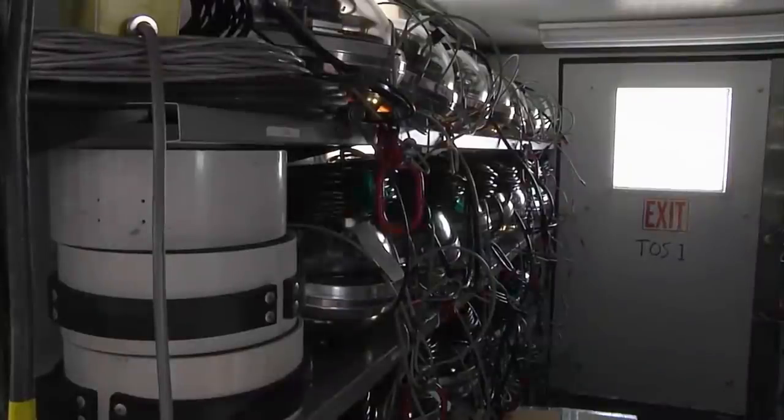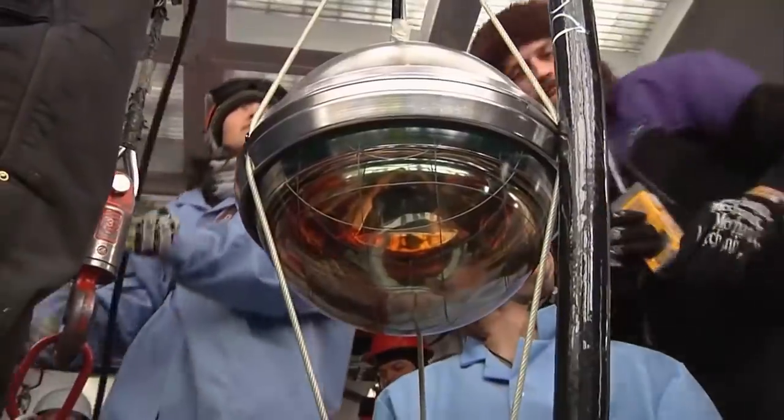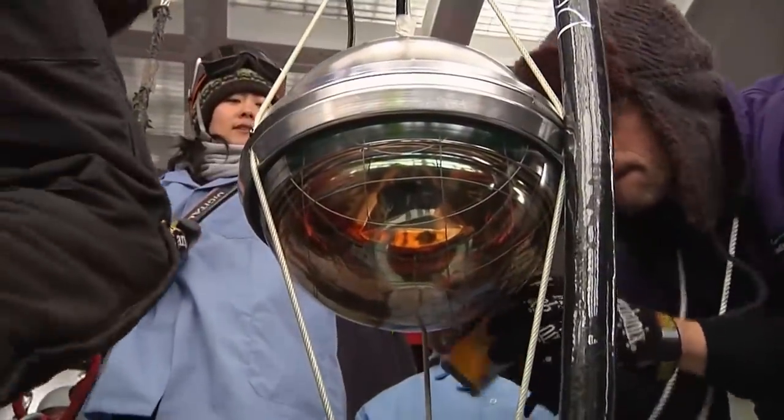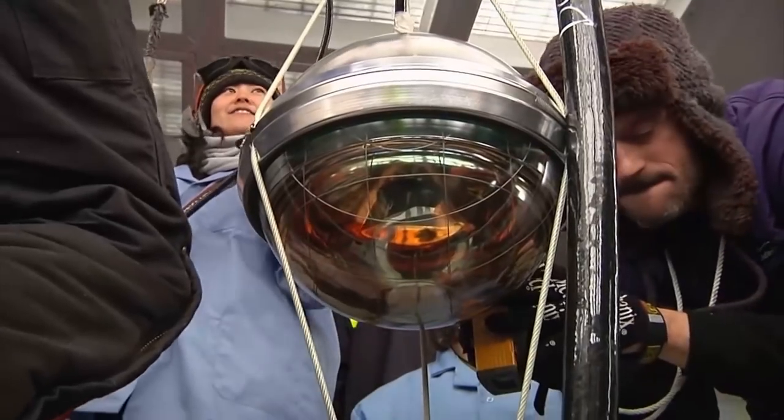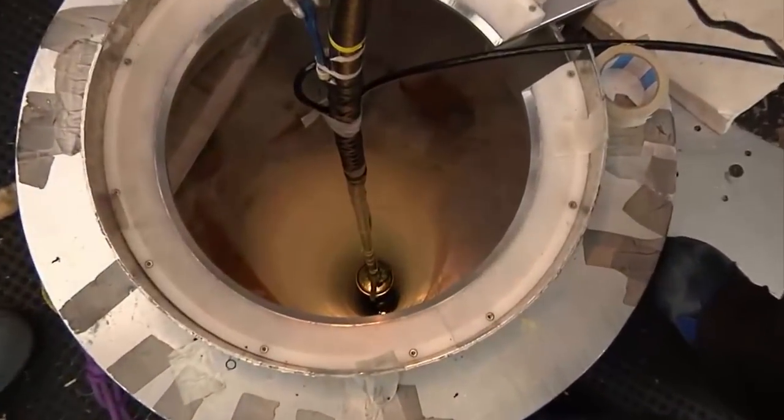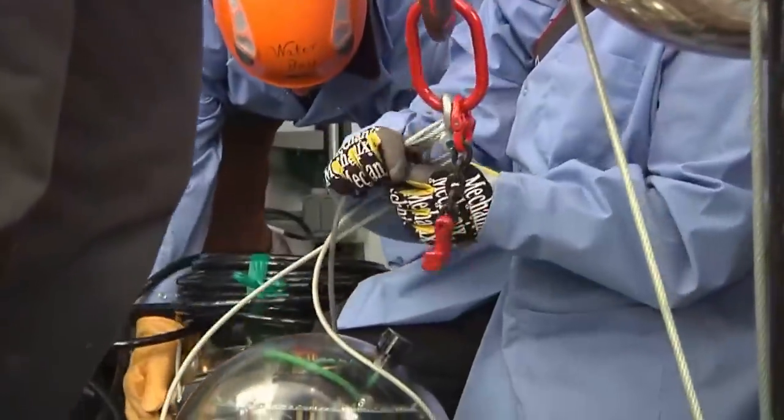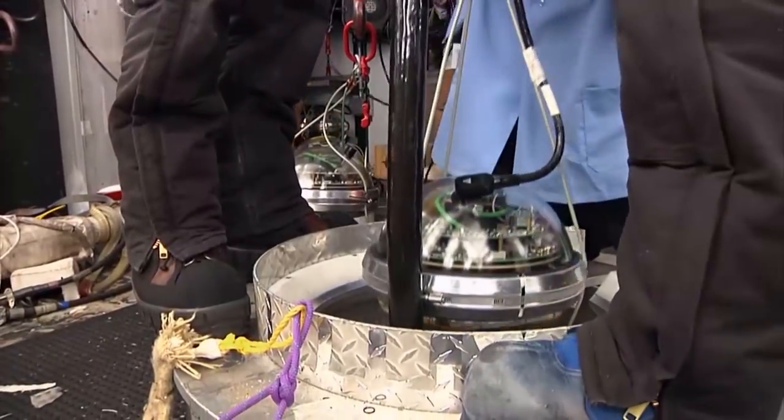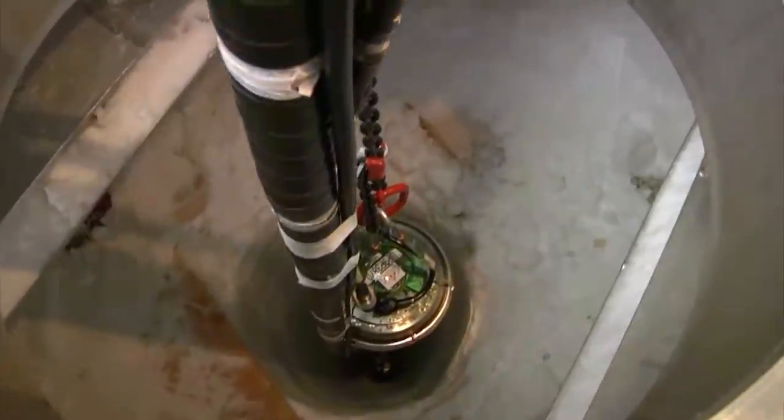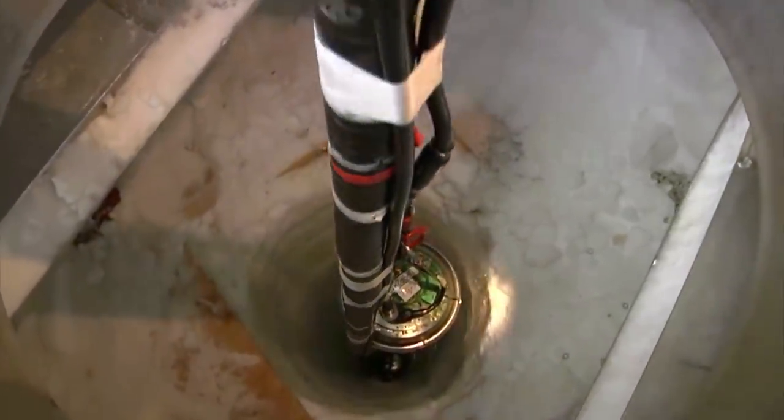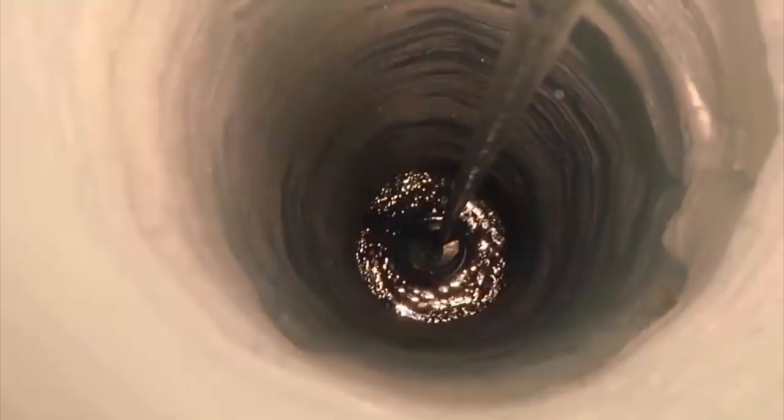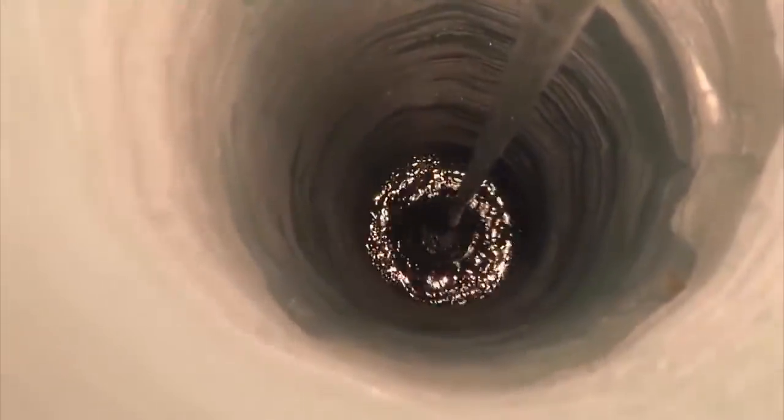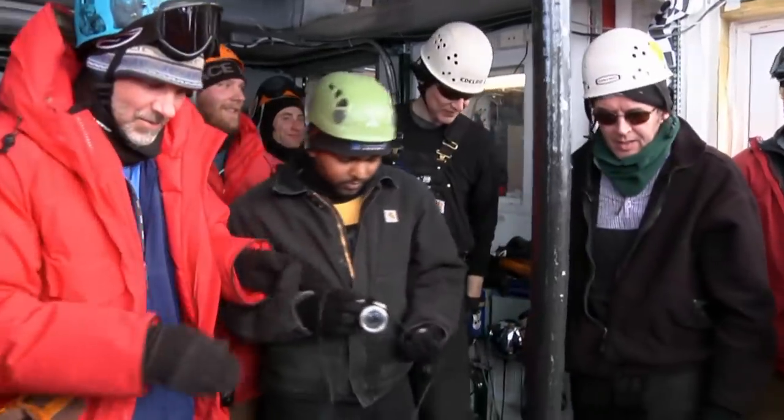The scientists have introduced photo sensors the size of basketballs into the ice on separate strings, like threaded beads, up to a depth of two and a half kilometers. Within a single day, the drill hole freezes closed.